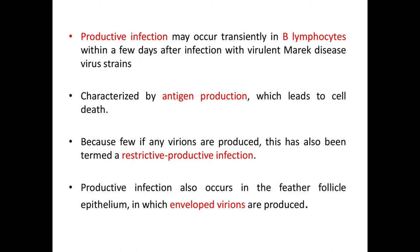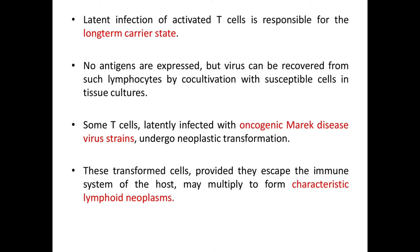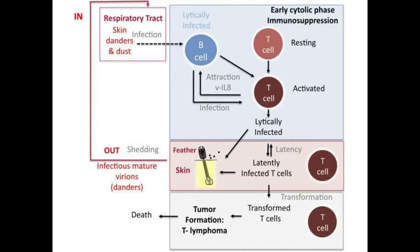Productive infection may occur transiently in B lymphocytes within a few days after infection with MDV. It is characterized by antigen production leading to cell death, and only a few virions are produced — hence it is named restrictive productive infection. Productive infection also occurs in feather follicle epithelium, in which enveloped virions are produced. Latent infection of activated T cells is responsible for the long-term carrier state; here no antigens are expressed, but virus can be recovered from such lymphocytes. Some T cells latently infected with oncogenic MDV undergo neoplastic transformation, and these transformed cells may escape the immune system of the host and multiply to form characteristic lymphoid neoplasms.